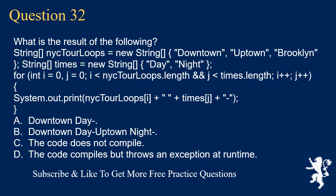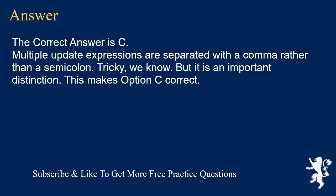Question 32. What is the result of the following? String[] nightTourLoops = {"Downtown", "Uptown", "Brooklyn"}; String[] times = {"Day", "Night"}; for (int i = 0, j = 0; i < nightTourLoops.length; i++; j++) — this uses a semicolon between update expressions. A. Downtown Day. B. Downtown Day, Uptown Night. C. The code does not compile. D. The code compiles but throws an exception at runtime. The correct answer is C. Multiple update expressions are separated with a comma rather than a semicolon. This is an important distinction, and it makes option C correct.